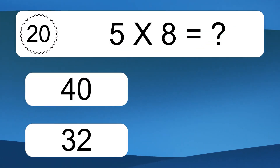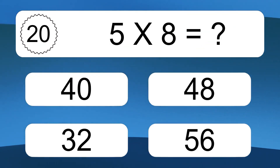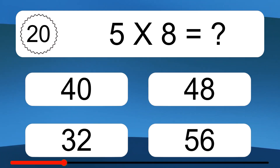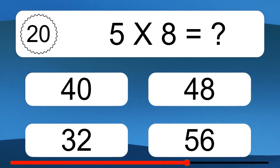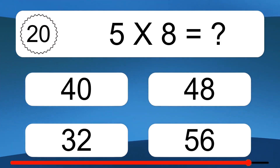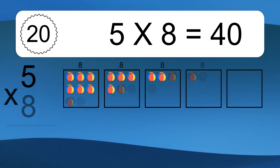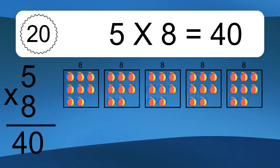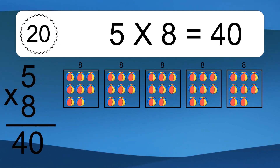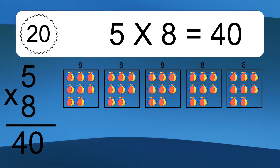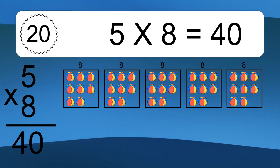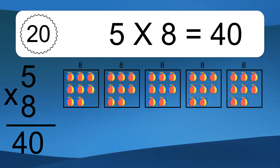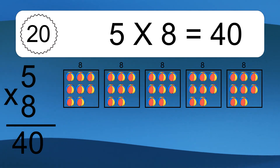5 times 8 equals what? 5 times 8 equals 40. We have 5 boxes and each box has 8 colorful balls inside. If you count all the balls in all the boxes together, you will have 5 times 8 balls. This equals 40 balls.